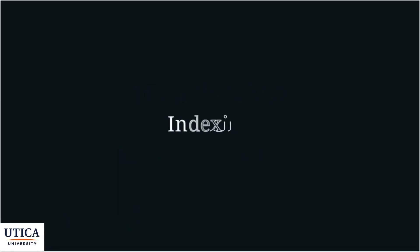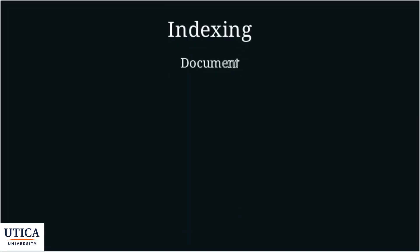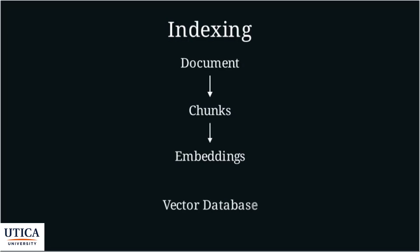Let's dive into indexing. The knowledge base, or document, is broken down into smaller chunks. These chunks are then converted into embeddings, which are numerical representations capturing the meaning of the text. These embeddings are stored in a vector database, which allows for efficient similarity search.